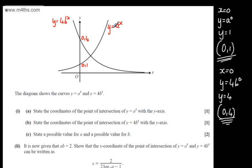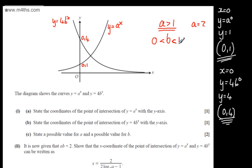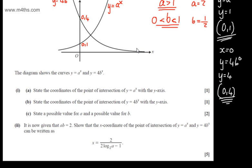We can see this is an increasing function, so we can say that a has got to be greater than 1. Therefore I'm going to say that a is equal to 2. We can see that y equals 4b to the x is a decreasing function, so b will have to be greater than 0 yet less than 1. So I'm going to write b is equal to one half. If it's increasing, a is greater than 1; if it's decreasing, b has got to be between 0 and 1.